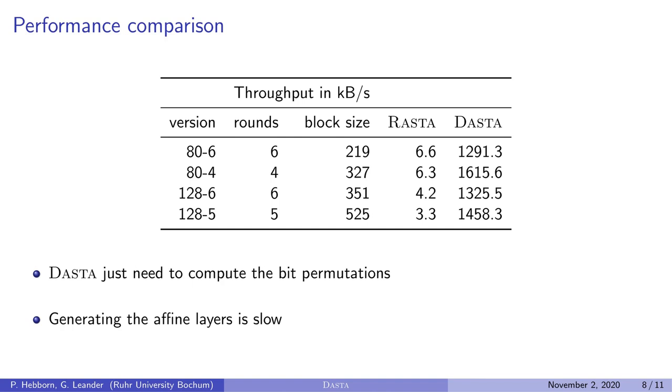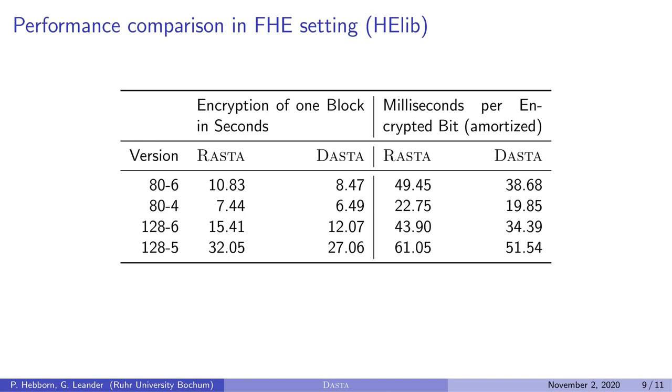But since on the normal PC, the metric that an AND operation is more expensive than XOR does not hold, the comparison is not completely fair. But as mentioned in the beginning with the example of hybrid encryption, this scenario on the normal PC is also important. But more significant is the comparison in the FHE setting. Therefore, we implemented both ciphers in the HElib. Remember that just the application of the affine layers and the chi function have to be done under FHE, but not the evaluation of the XOF. And since FHE in general is really slow, the evaluation of the XOF is now negligible.